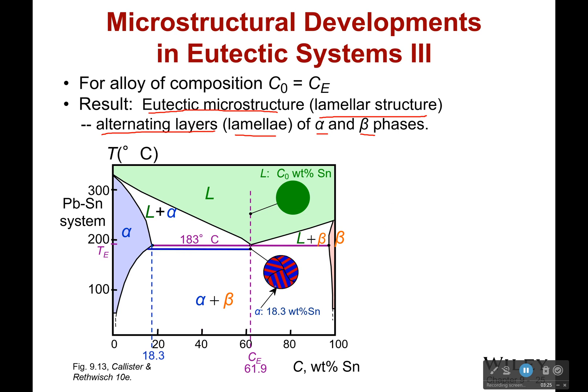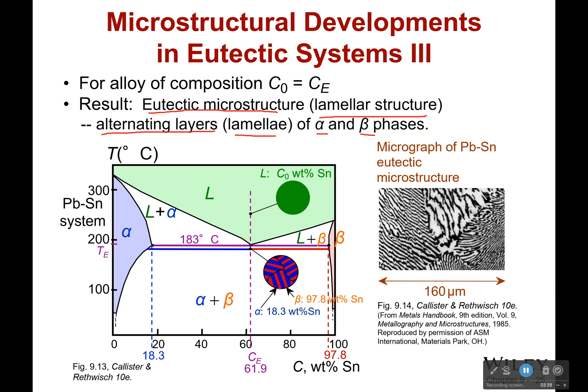And so these phases are going to have phases are 18.3 weight percent tin, and then 97.8 weight percent tin. Back and forth, back and forth, back and forth. And depending on the temperature, that's going to change what their composition is. And so this is actually a micrograph of that lead-tin eutectic microstructure. And you can see it right here. You see these individual lines. And how thin or wide the lines are depends on how it was heat treated. How quickly did you cool? What did you do while you were cooling it? There's lots of different things that can happen there.